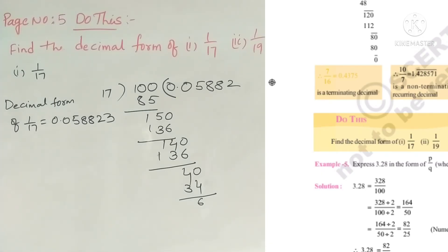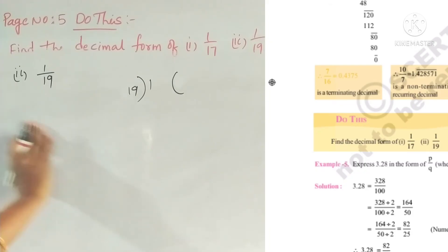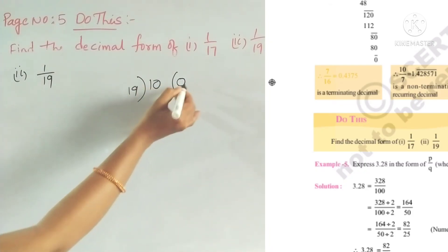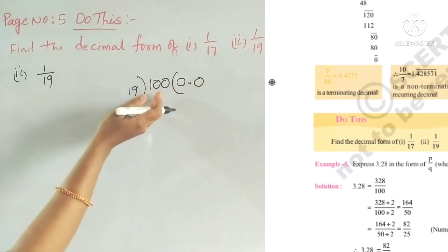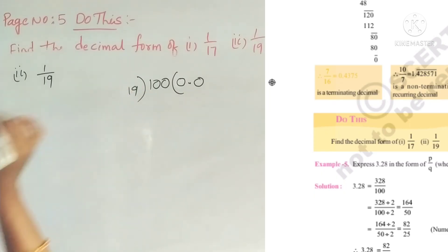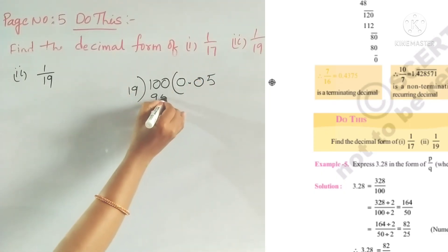The second problem is 1 by 19. Here also 19 is a prime number, so we have to divide. 19 fives are 95. So 5 will come after the decimal point.